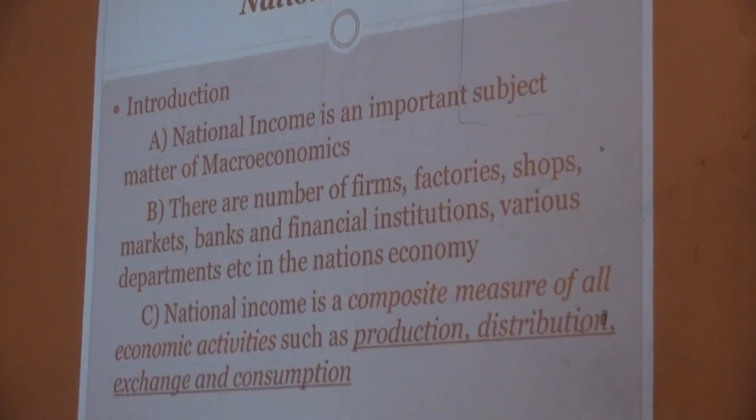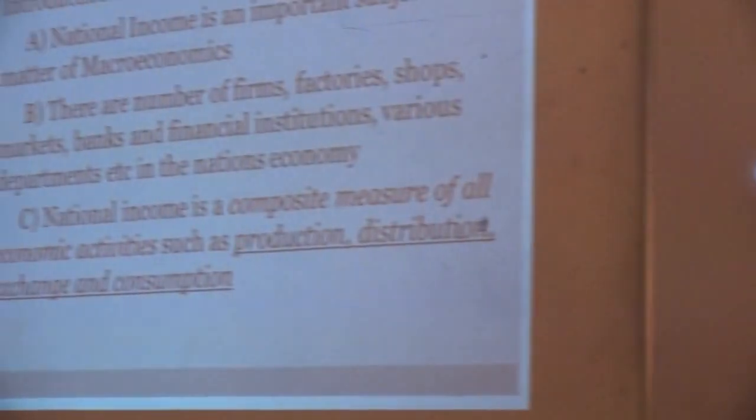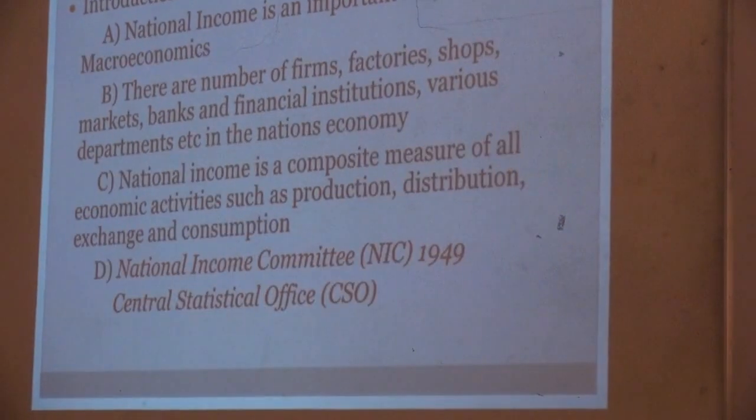National income is a composite measure of all economic activities. What is meant by composite measure? We take all economic activities together in a particular manner. Those economic activities are production, distribution, exchange, and consumption. When we take all these activities together and calculate the income of a particular country, that is called national income.